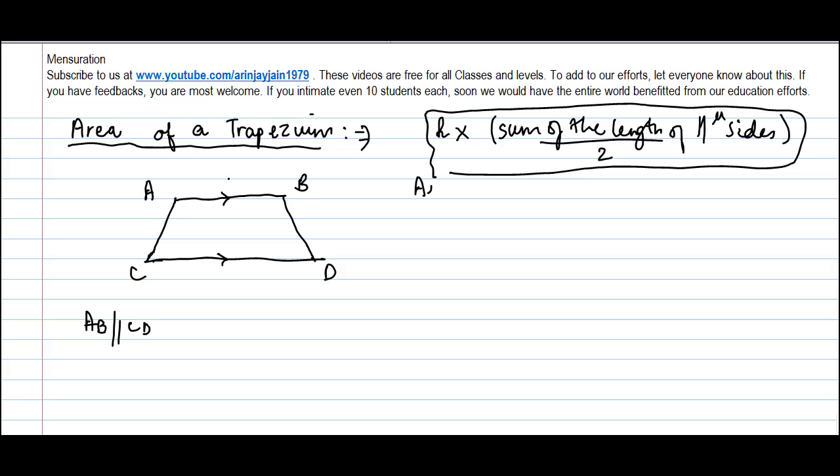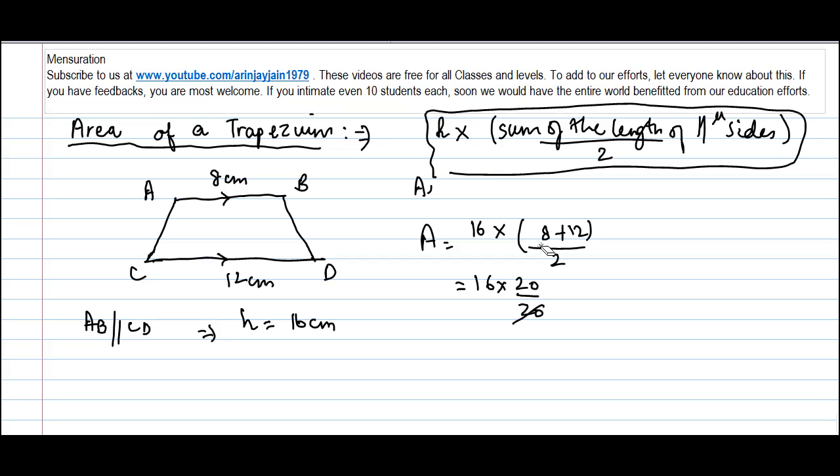Let us say this is 8 cm, this is 12 cm, and suppose it is given that the height is equal to 16 cm. Then the area of the trapezium will be equal to 16 into sum of the length of the sides 8 plus 12 divided by 2, or 16 into 20 divided by 2, or 16 into 10 is equal to 160 cm square.